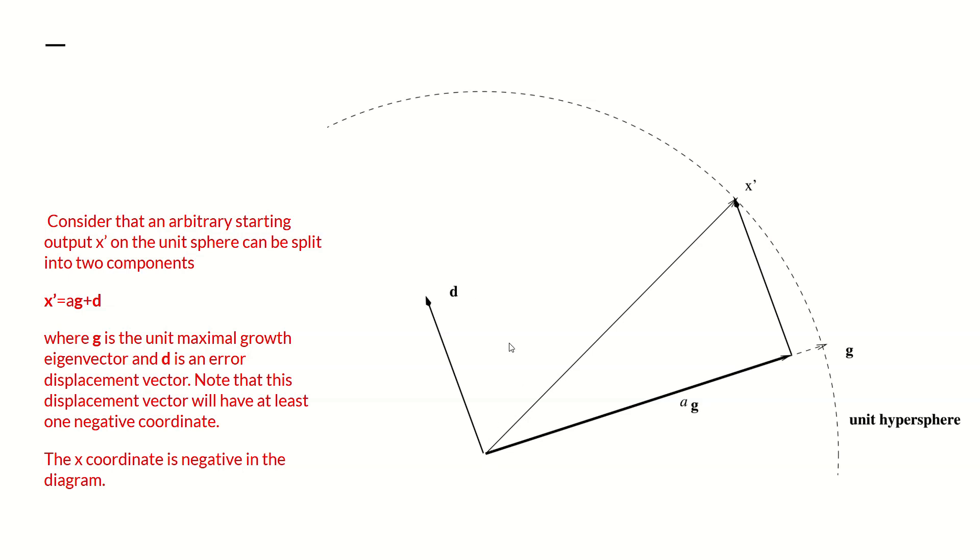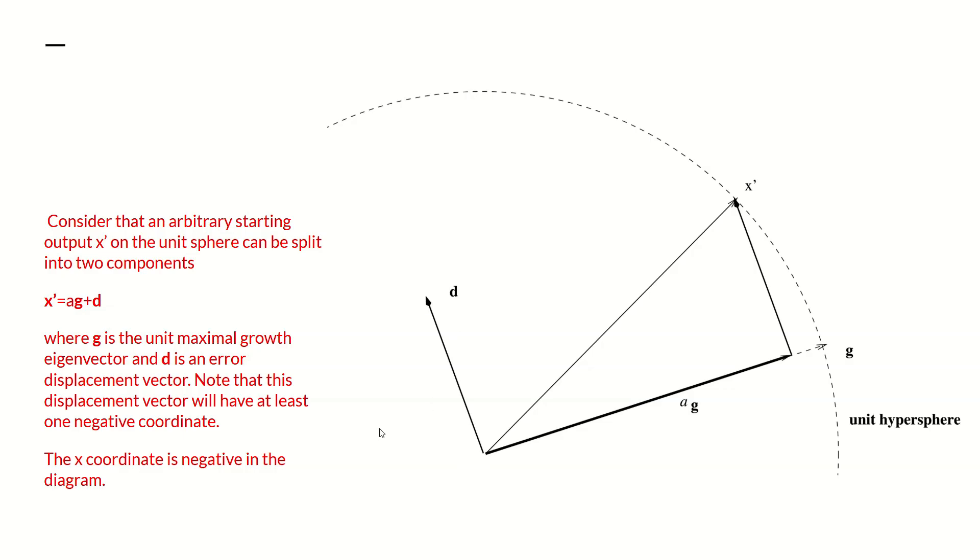Now, the important thing is to note the displacement vector will have at least one negative coordinate. If we look at this, we can see in this case the x-coordinate of D is negative. You can see this visually, but you can show it's an algebraic necessity because the growth vector G is all positive. So a vector at right angles to it has an inner product of zero, and to have an inner product of zero, it must have some negative components. As such, this displacement vector is non-economic, that is to say it's something which can't exist in an economy. It involves production of negative quantities of goods.